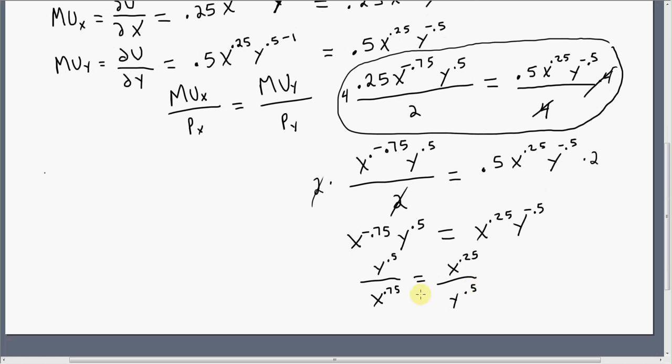And now this will actually simplify up very nice for us. If we, you can see it here, if we just cross-multiply. Multiply both sides through by Y to the 0.5, and then do the same thing with this X term down here. X to the 0.75, if we multiply everything through by that, we're going to be left with the following.